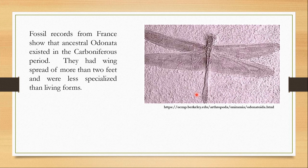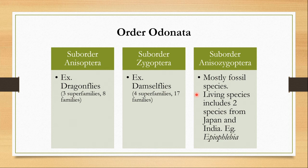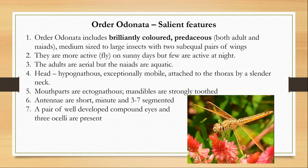However big or small they were, they existed in the world for many years. Order Odonata is divided into three suborders: suborder Anisoptera which includes all the dragonflies, suborder Zygoptera which includes all the damselflies, and suborder Anisozygoptera which includes mostly fossil species, with two living species found in Japan and India. One example is Epiophlebia.